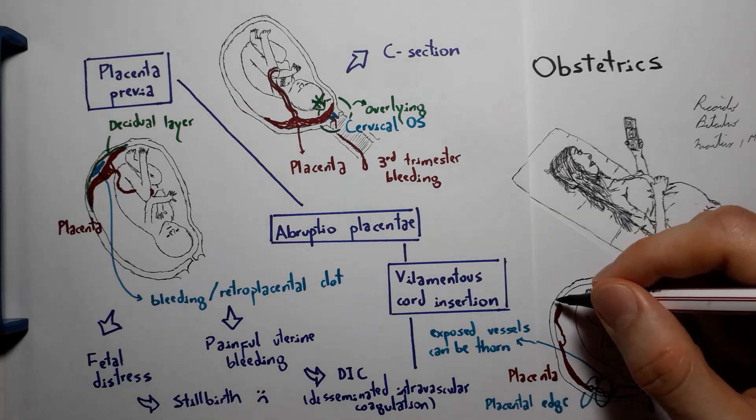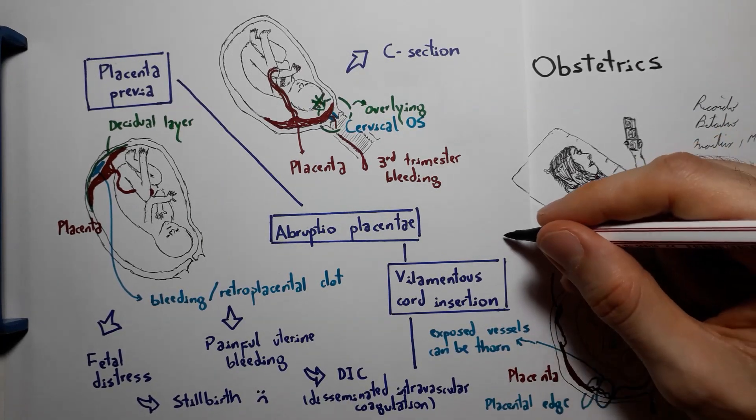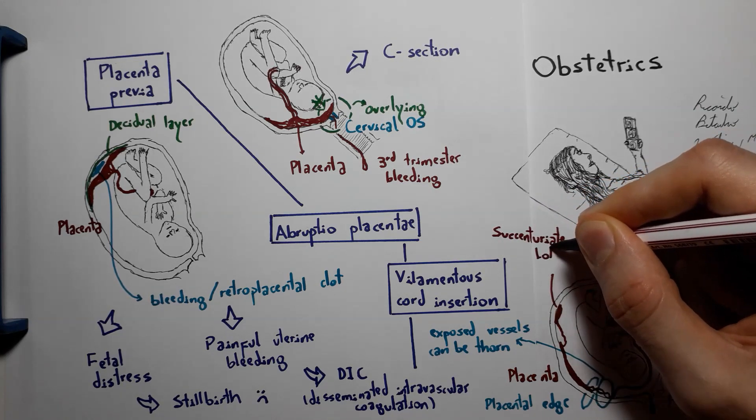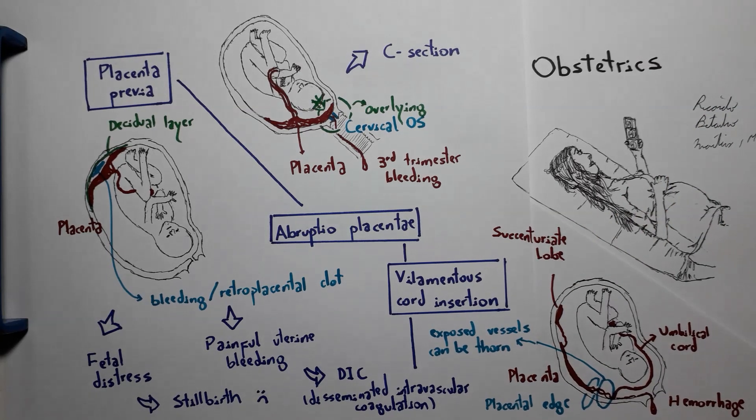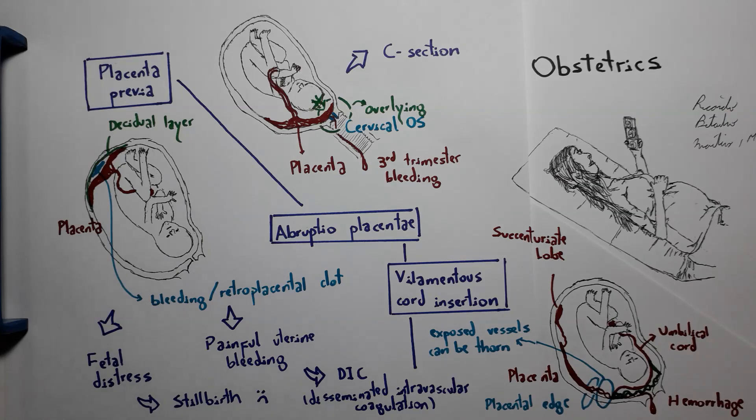As an abnormality, there is also the presence of accessory placental lobes, which can predispose to hemorrhage, since they can be detached from the placenta and bleed. Having a villamentous cord insertion or a placenta with accessory lobes also makes it possible to present with vasa previa.